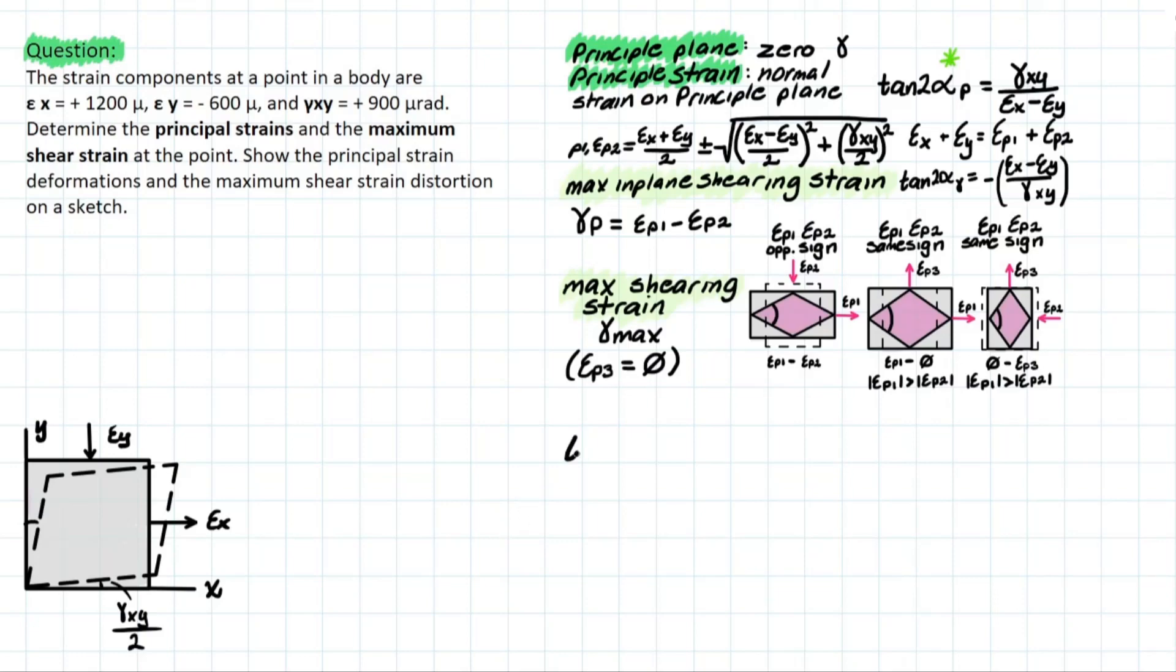So let's write it down. We have tan 2αP is going to equal to the shearing strain XY over normal strain X minus normal strain Y. And if we isolate for this αP, we're going to be left with one half for this 2, the tan inverse for tan, and we are simply plugging in the variables that we have.